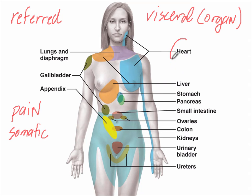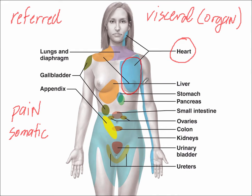One of the most important examples of this is going to be in the heart, as you'll probably encounter sometime in your career. Oftentimes when patients experience pain on the chest, specifically on the left side and traveling down the medial side of the left arm, that is very indicative of pain in the heart — a myocardial infarction possibly.